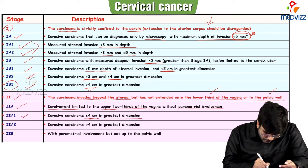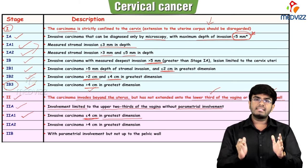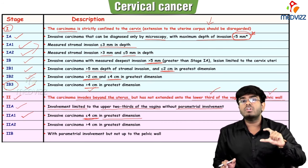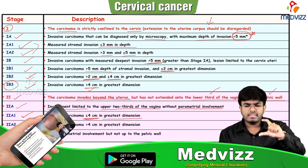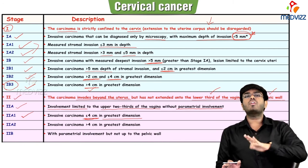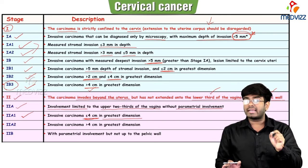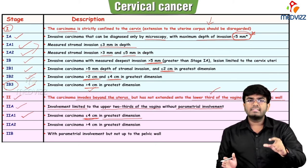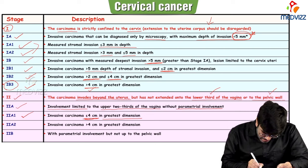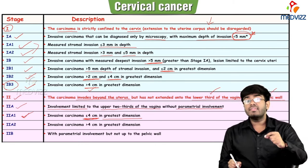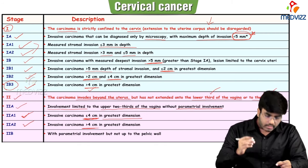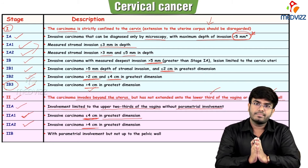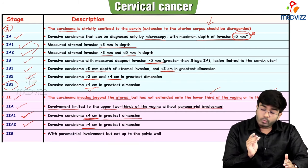Once the upper two-thirds of the vagina is involved, the stage becomes 2 regardless of tumor size. Within stage 2, we look at tumor size: less than 4 cm is 2a1, greater than 4 cm is 2a2. In stage 2a, there is no parametrial involvement. In stage 2b, along with upper two-thirds vaginal involvement, parametrium is also involved, but not yet reaching pelvic sidewalls.